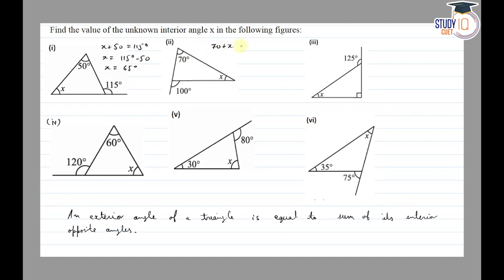In the second figure: 70 plus x is equal to 100. Since the exterior angle equals the sum of interior opposite angles, x is equal to 100 minus 70, so x equals 30 degrees.